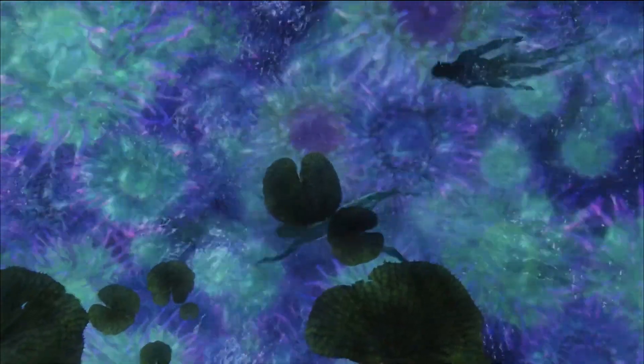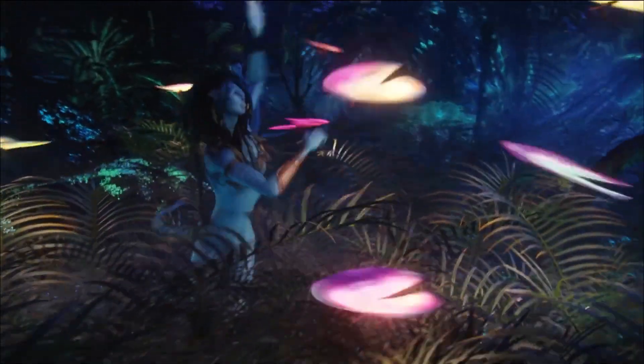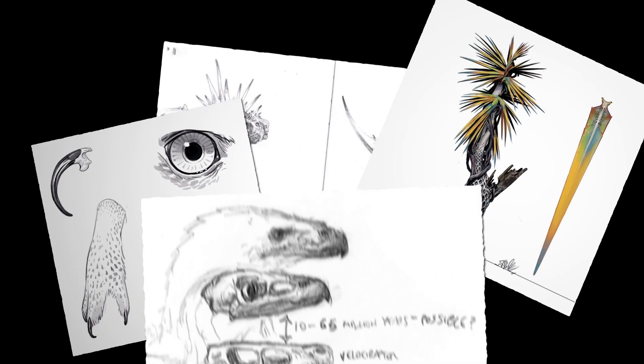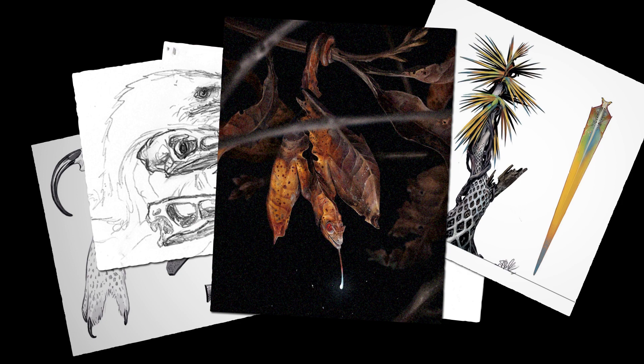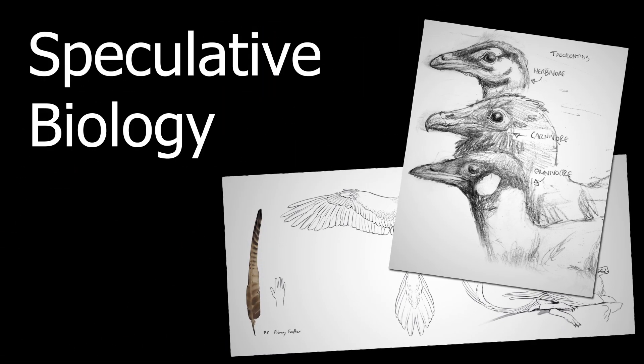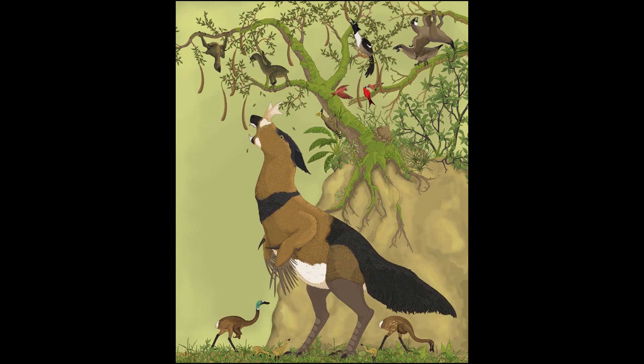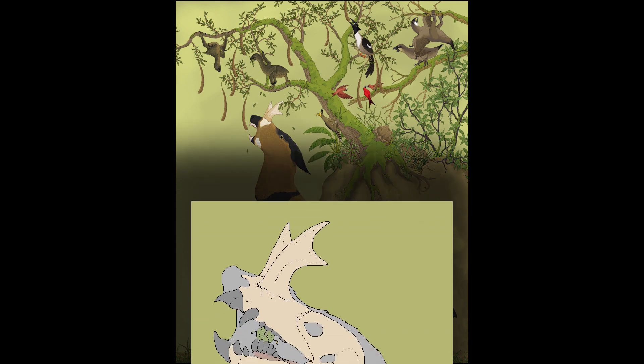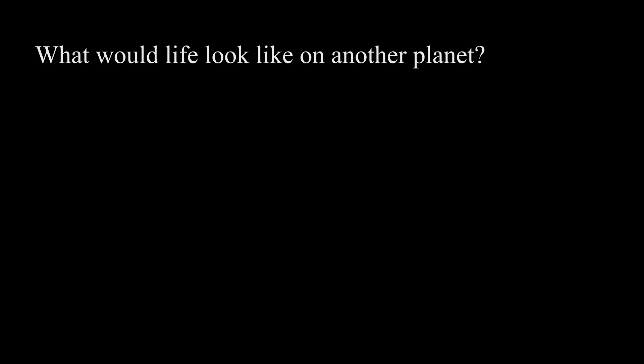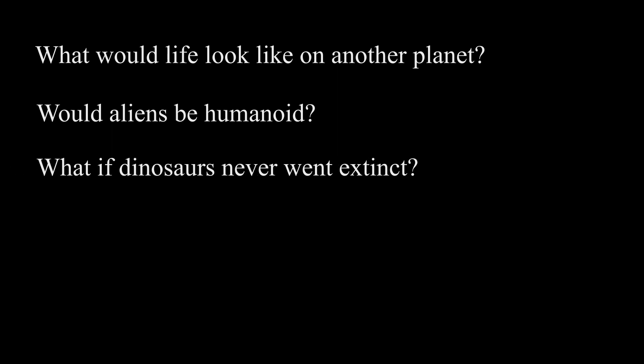But one worth highlighting is what could be considered science-based worldbuilding, in particular speculative biology. Speculative biology is a genre of worldbuilding based around what kind of organisms could come to live and how they'd interact within their environment. It raises questions such as: what would life look like on another planet? Would it make sense for aliens to be humanoid? Or, what would Earth be like if dinosaurs never went extinct?